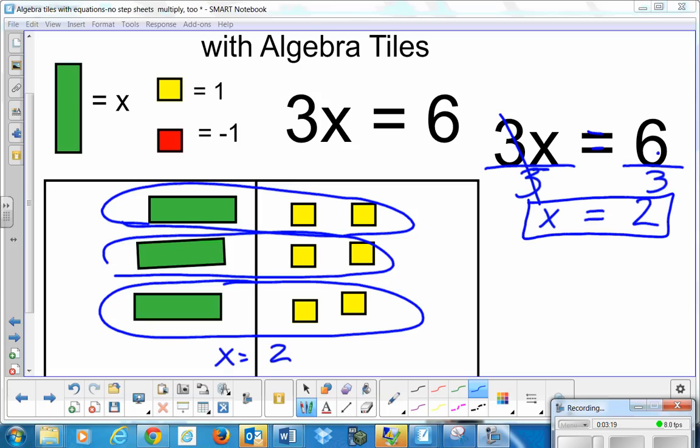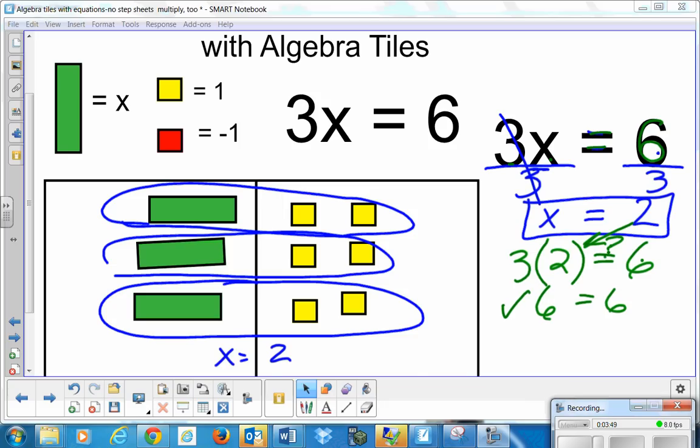x is equal to 2 is my solution. But I'm not done until I actually check it. So I check it by putting that x is equal to 2 into my equation. My original equation was 3 times x equals 6. Well, now I'm going to put that 2 in there and substitute in. And is it really equal to 6? 3 times 2, is it really equal to 6? Well, yes, it is. 6 is equal to 6. So my equation proved out to be true.